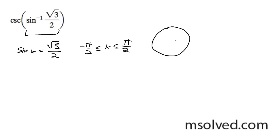So root 3 over 2, that's going to be root 3 for my y component and then 2 for my r component. So this ends up being pi over 3 for x.